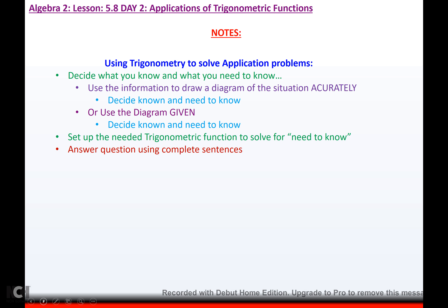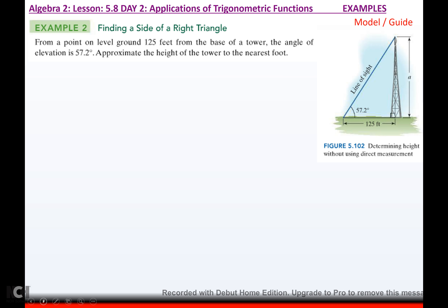Today we're going to finish talking about applications of trigonometric functions — using trigonometry to solve application problems. Decide what you know and what you need to know. Use the information to draw a diagram of the situation accurately. Use the diagram given and decide what's known and what you need to know. Set up the needed trigonometric function to solve for the unknown, then answer your question using complete sentences.